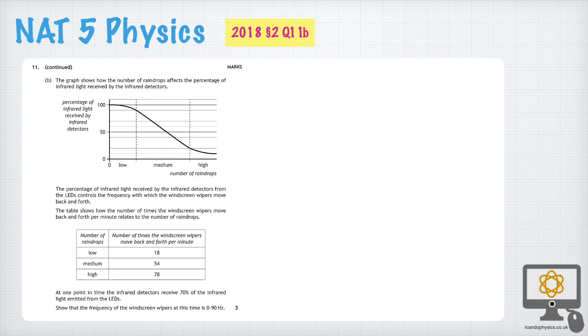So what information do we have? We've got two charts. The first one is a table, sorry, a graph, and it shows how the number of raindrops affects the amount of light received by the detector.